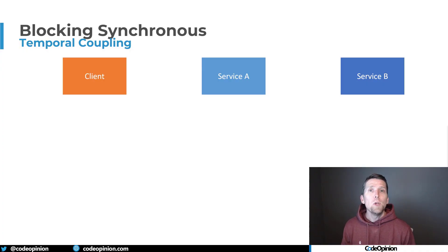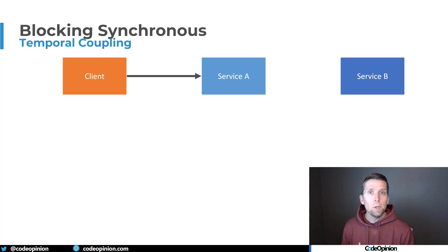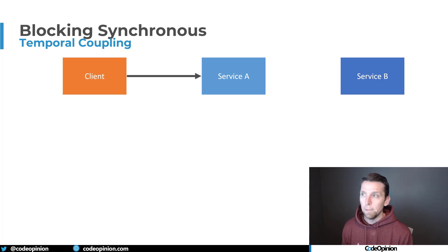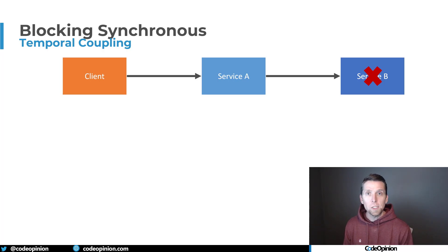So let's say we have many different services and they need to communicate and get data from each other. We have a client that makes a request to service A. Now service A needs to get data from service B, but it could be many different services. The problem with being temporally coupled like this is that we need service B to be online so that it can accept and return a response. What happens if that request fails? If service B is unavailable, it's timing out, it can't give us back the data that we need, so this will ultimately fail all the way back to the client.